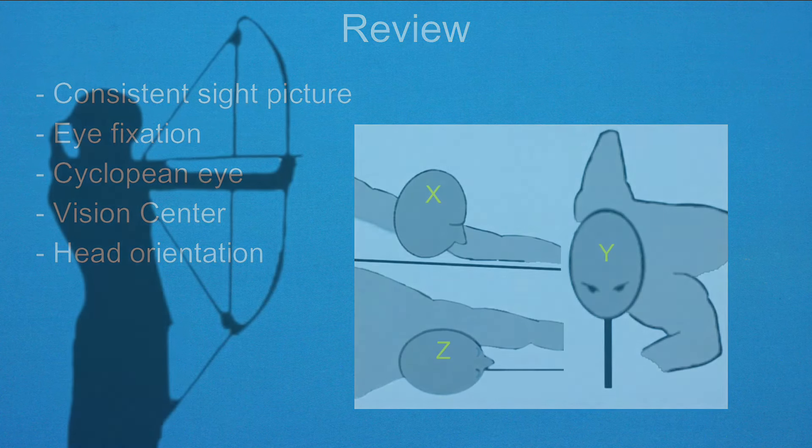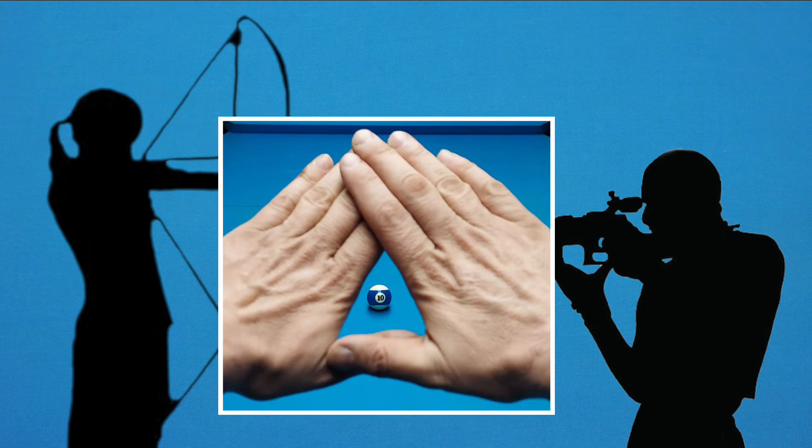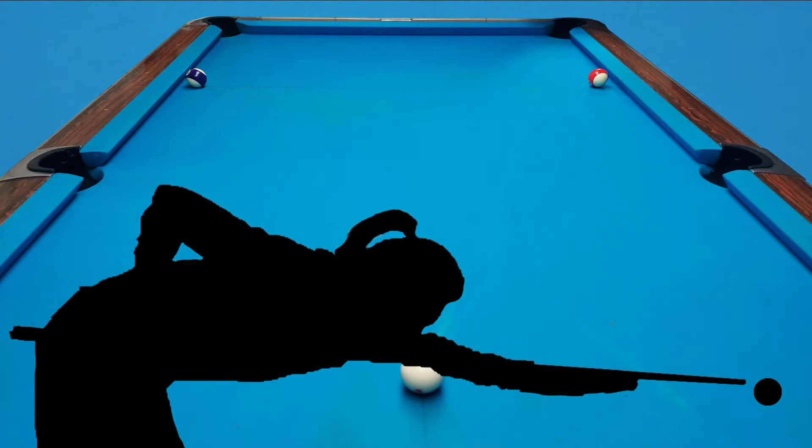I found it interesting that the instruction materials I found for archery and target shooting do not mention the vision center, but focus only on the dominant eye. Could it be that pool requires more accuracy? Is more three-dimensional information needed to play pool? In my opinion, yes.